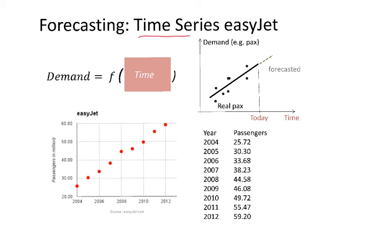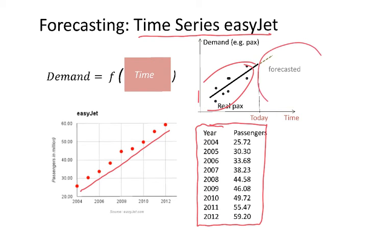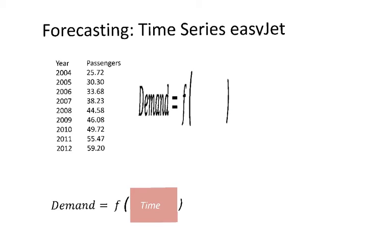So let's apply this time series to a real example of the low-cost company EasyJet. What I did here was to look at the number of passengers who travelled with EasyJet in this nine-year period, from 2004 to 2012. And they are being represented in this axis. So that's the information I have from the past. But I want to calculate what happens in the future. So I need to create a demand function. Demand is looking for the number of passengers.